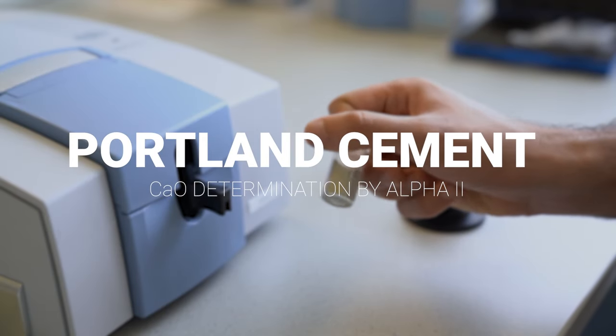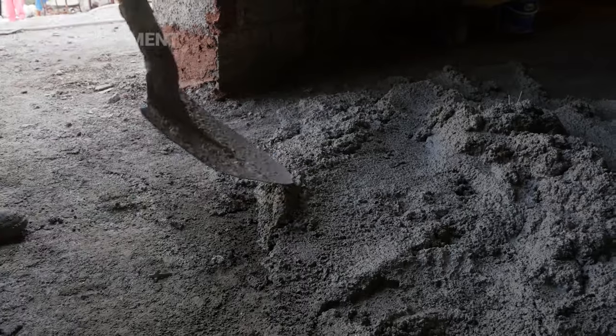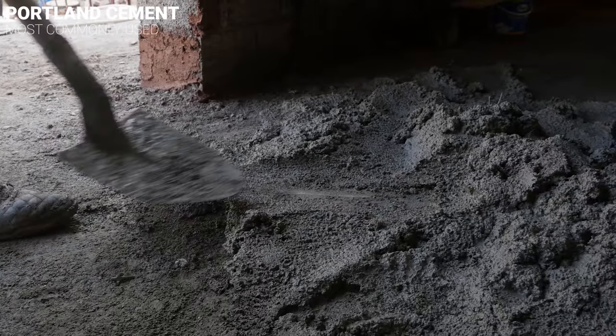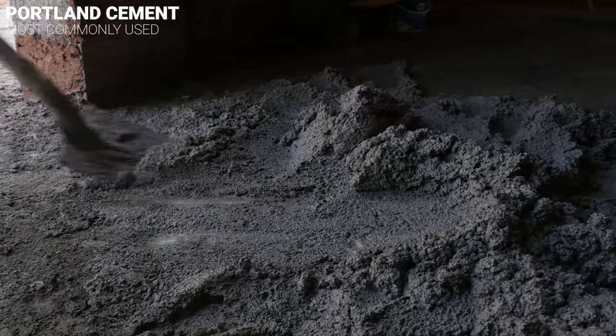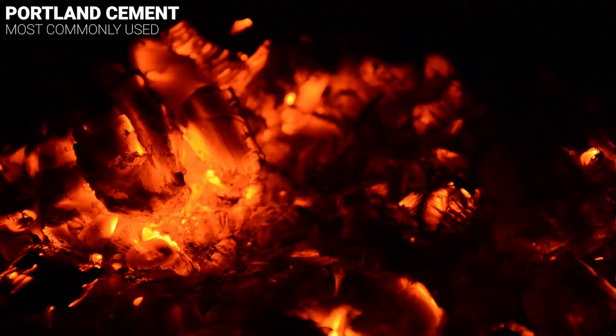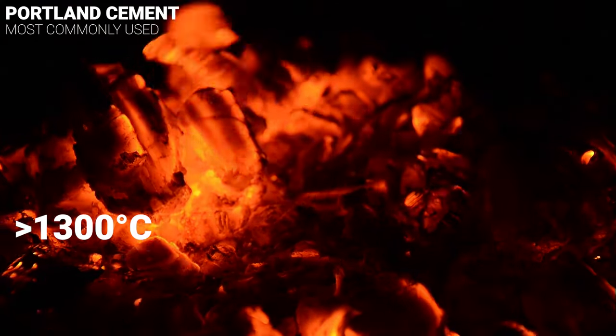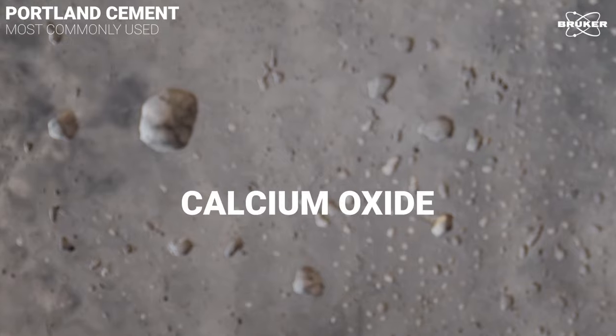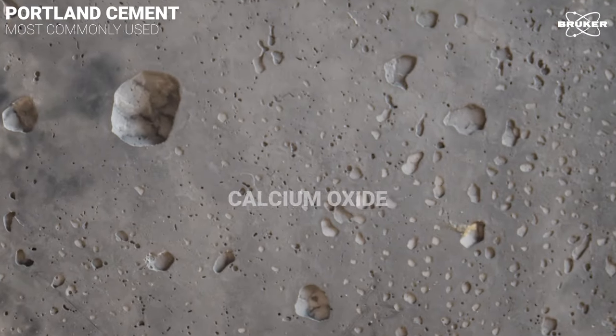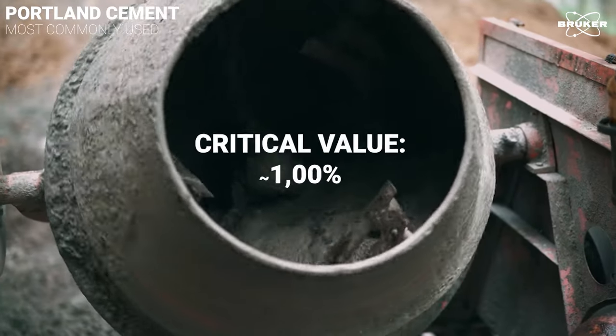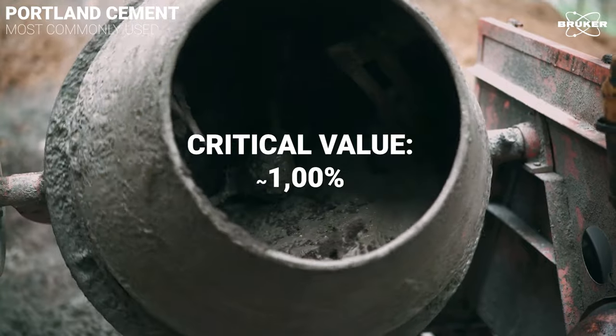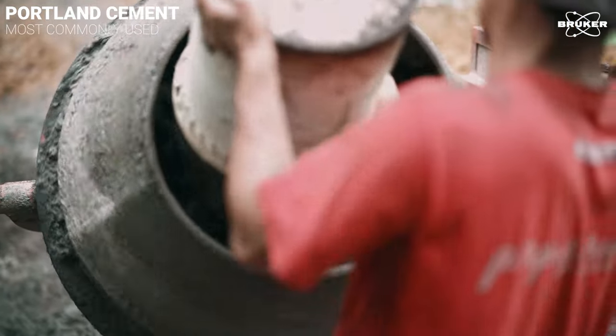Calcium Oxide Determination in Portland Cement. Portland cement is the most commonly used type of cement in the world. During its production at over 1,300 degrees Celsius, calcium oxide is formed as a byproduct. In the final product, Portland cement should ideally contain approximately 1% or less of free calcium oxide.